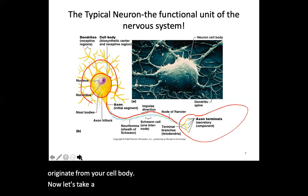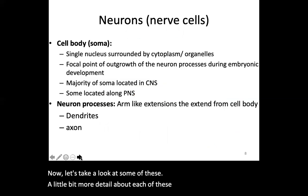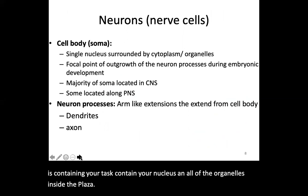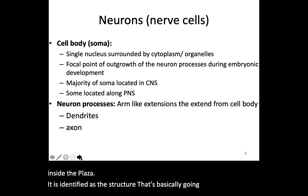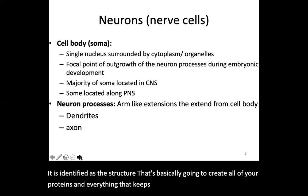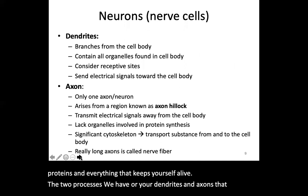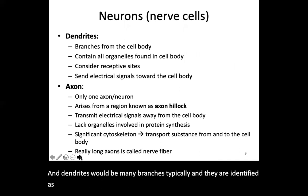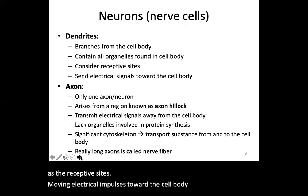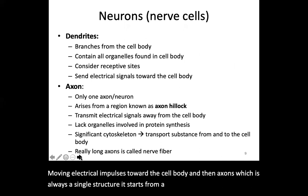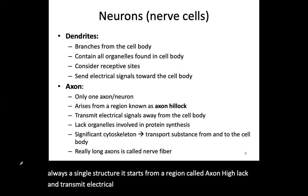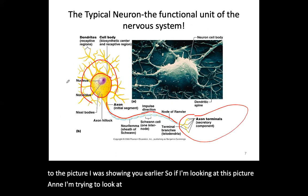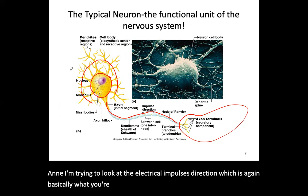The soma or cell body contains your nucleus and all organelles of the cytoplasm — it creates all the proteins needed to keep the cell alive. Dendrites are typically many branches and are identified as the receptive side, moving electrical impulses toward the cell body. The axon is always a single structure; it starts from a region called the axon hillock and transmits electrical impulses away from the cell body. The direction of electrical impulses always starts with the dendrite.